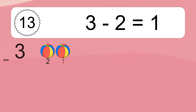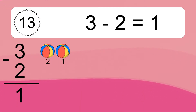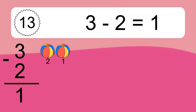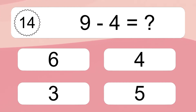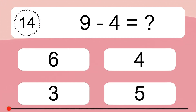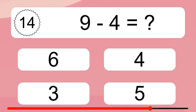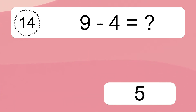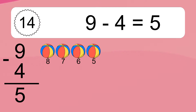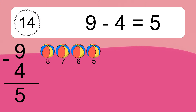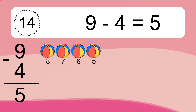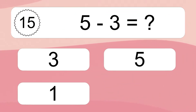3 minus 2 equals what? 3 minus 2 equals 1. Let's count it. 2, 1. 9 minus 4 equals what? 9 minus 4 equals 5. Let's count it. 8, 7, 6, 5.